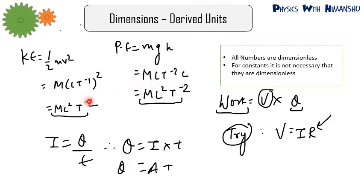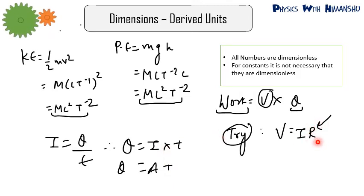Notice that the dimension of kinetic energy and potential energy are the same — ML²T⁻². Remember that in physics, multiple quantities can have the same dimension but different meanings. Similarly, current is charge divided by time, so charge = current × time, giving dimension of charge as AT. For resistance, work equals V times q, so you can find the dimension of potential difference from this formula and then find dimension of resistance — this is your homework.